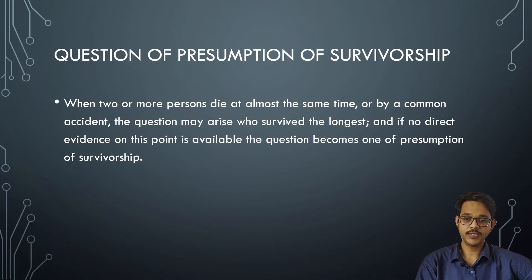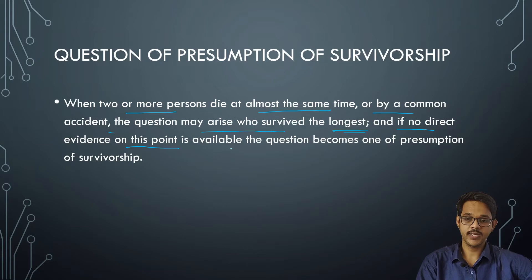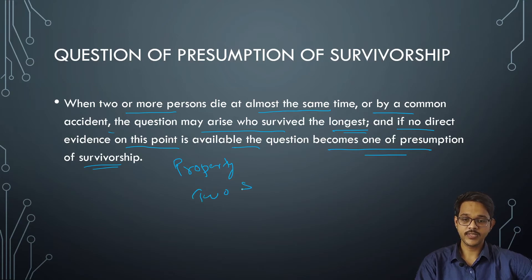Question of presumption of survivorship. When two or more persons die at almost the same time or by a common accident, the question may arise as to who survived the longest. If no direct evidence is available, this becomes a question of presumption of survivorship — relevant mainly in property disputes, such as when two sons die in a common disaster. This depends on the post-mortem report done by doctors, who will determine who survived the longest.